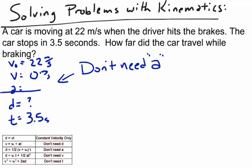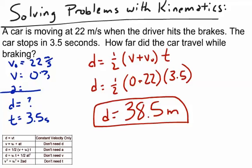Here we see we're looking for displacement, how far it traveled, which means we don't need a. So let's pick the don't need a equation, plug the numbers in, and then solve and get our solution. In this case, the displacement is 38.5 meters.